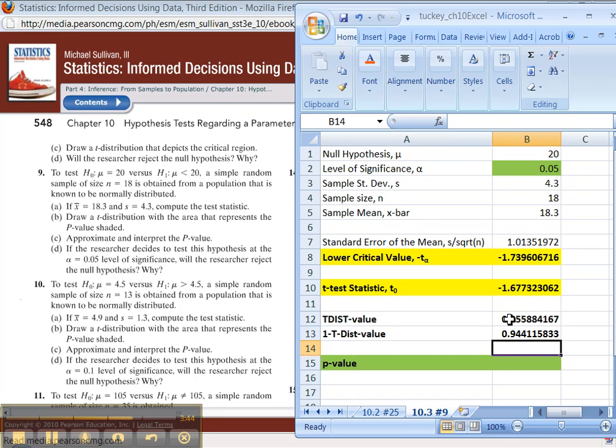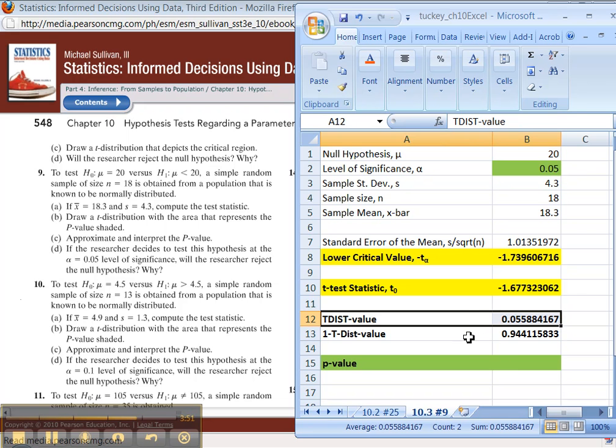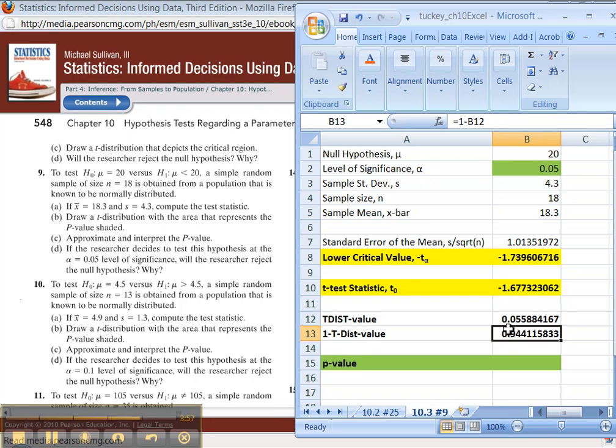And then do 1 minus that for the other one. Okay? Whichever one of these is lower, that's your p-value. In this case, it's this one right here. We have to do this absolute value thing because it's possible for this to turn out to be a positive number, in which case then this would be the t-distribution value. So the p-value is actually equal to the lower one, this one, 0.055. There we go.